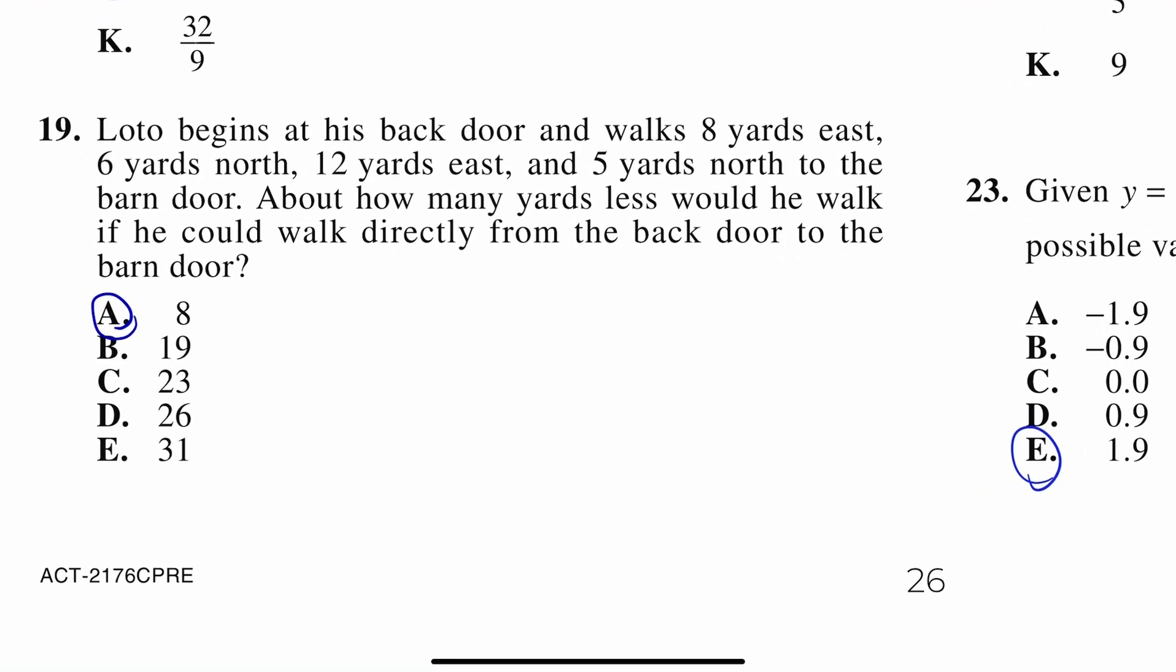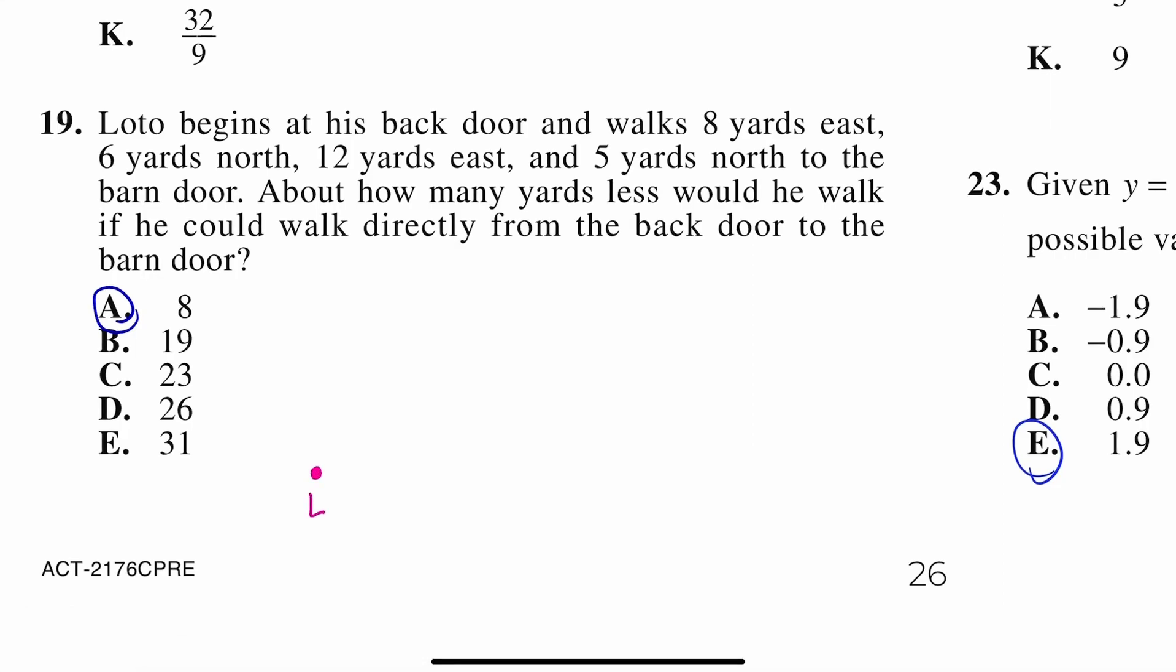Loto begins at his back door and walks 8 yards east, 6 yards north, 12 yards east, and 5 yards north to the barn door. How many yards less would he walk if he could walk directly from the back door to the barn door? So I'm just going to start here. Here's Loto. This is where he's starting. Okay, he walks 8 yards east. So there's 8 yards. Then he goes 6 north. This is not going to be to scale, obviously. 12 yards east. 12 yards. And another 5 yards north. So he walked a total of, add all those up, 8 plus 6 plus 12 plus 5. So he walked a total of 31 yards.